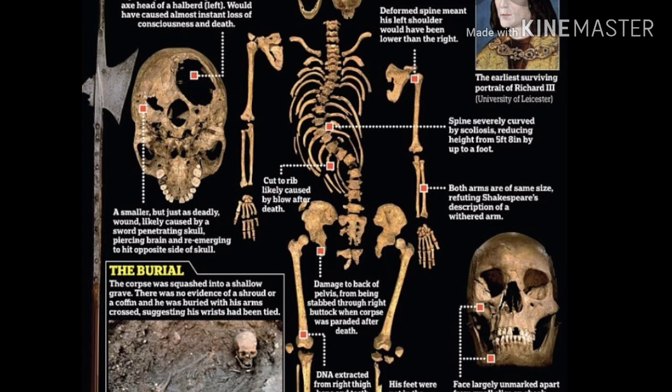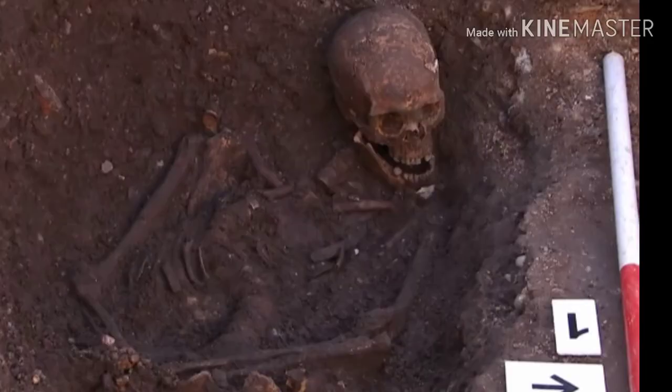He was buried where he laid. And years later, his remains were rediscovered in 2012 underneath a parking lot. To DNA match, they looked at Richard III's sister's 17th generation descendant, Michael, who was a Canadian woodworker. He also made the coffin for the 2015 reburial of Richard III. And being 17 generations related to him, that kind of means Michael could claim the British throne if he really wanted to, as Michael I.